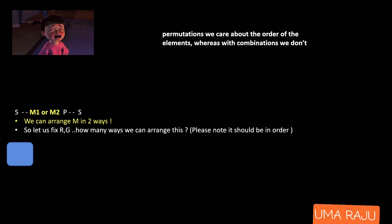Leaving Ri and Ga aside, I'll fix Ma first. Since we have only two Mas — Ma1 and Ma2 — Ma can be arranged in two ways. And fixing Ri and Ga is the same problem as fixing Dha and Ni, since they have identical structure.